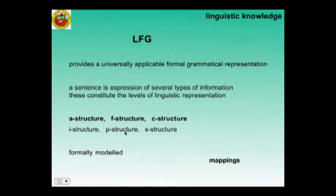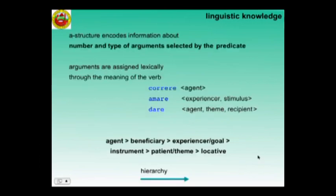Important is not only the three structures but also the mappings between them. A structure encodes information about the number and type of arguments selected by the predicate. These arguments are placed in a hierarchy — agent first, beneficiary, etc. The arguments are assigned lexically through the meaning of the verb: the verb correre has agent, love has experiencer, and dare has three arguments.